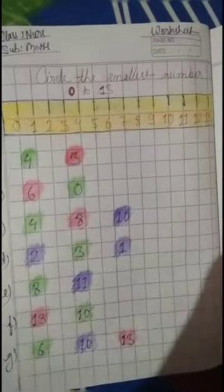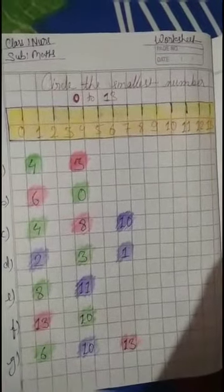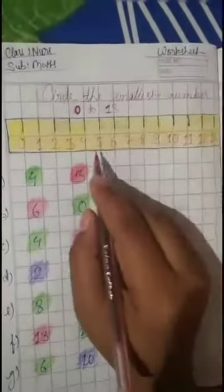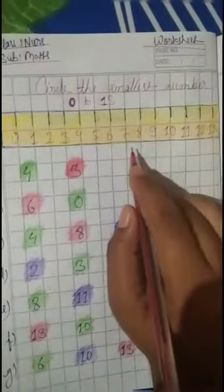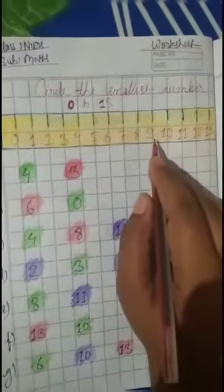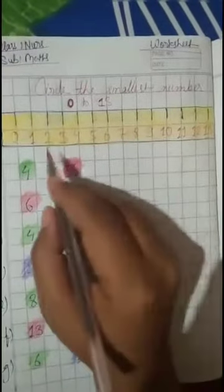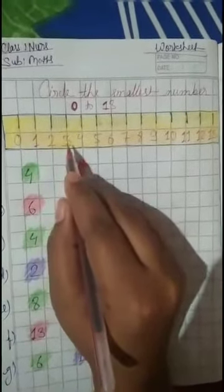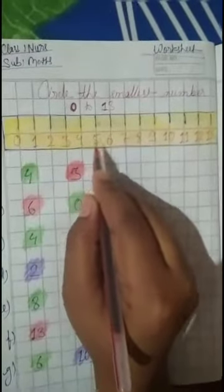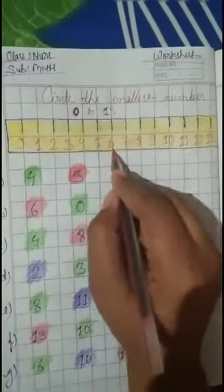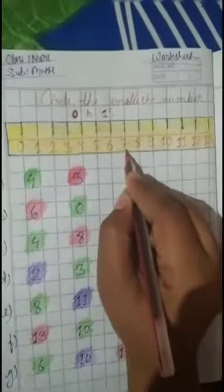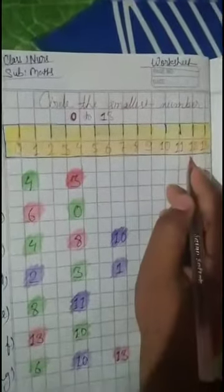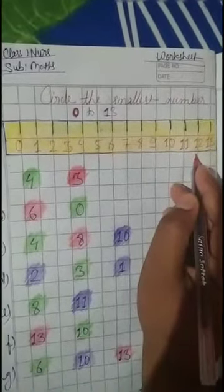So when we count further from 1 to 13, the number becomes bigger. 1 se bada 2, 2 se big 3, 3 se big 4, 4 se big 5, 5 se big 6, 6 se big 7, 7 se big 8. As we keep counting forward, the number keeps getting bigger.